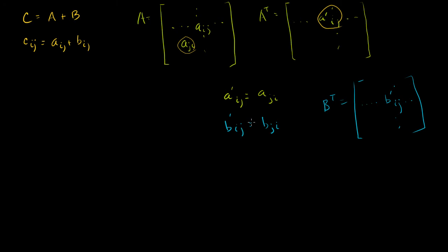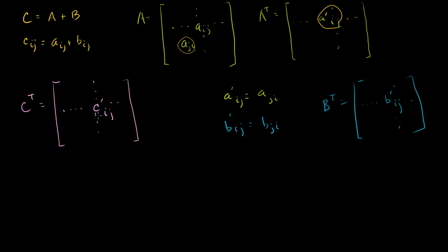So we already have what Cij is equal to. What is the transpose of C going to be equal to? C transpose is just going to be a bunch of entries ij — I'll put a prime there showing those are entries of the transpose. And we know that C prime ij is equal to Cji. We've just expressed the definition of the transpose for these three matrices.